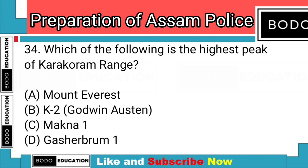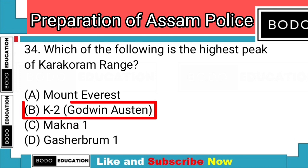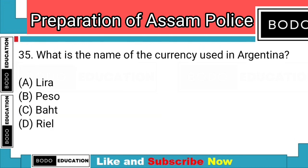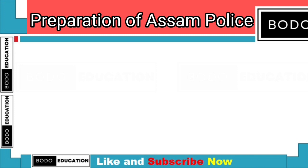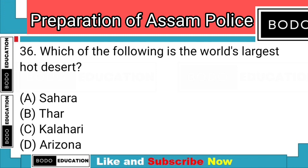Question number 34: Which of the following is the highest peak of the Karakoram range? Answer: Option B — K2, which is also known as Godwin-Austen. Question number 35: What is the name of the currency used in Argentina? Answer: Option B — Peso.